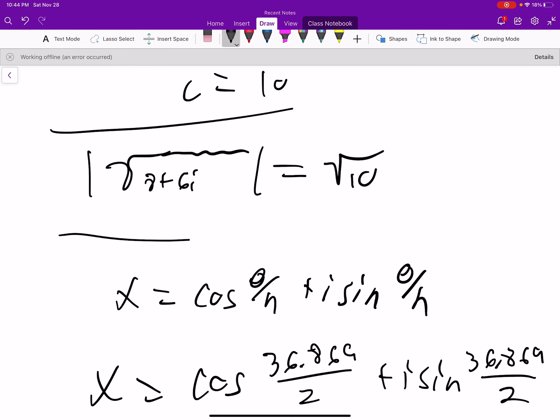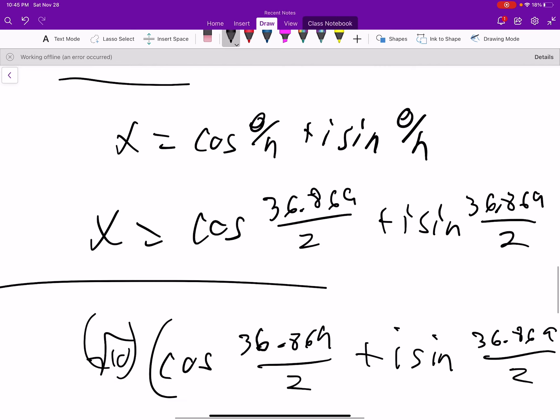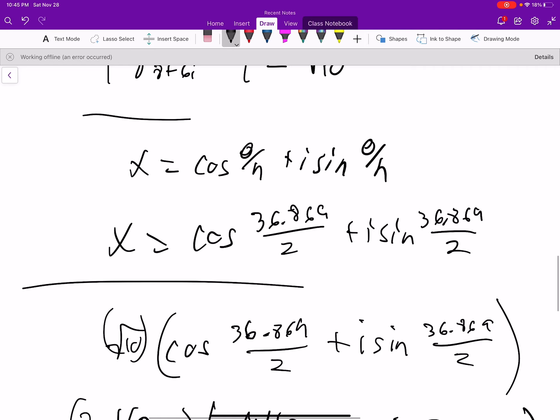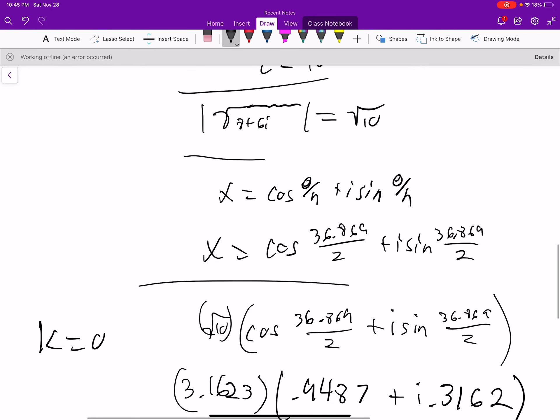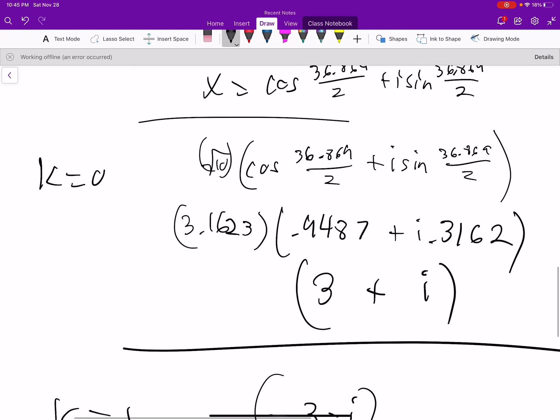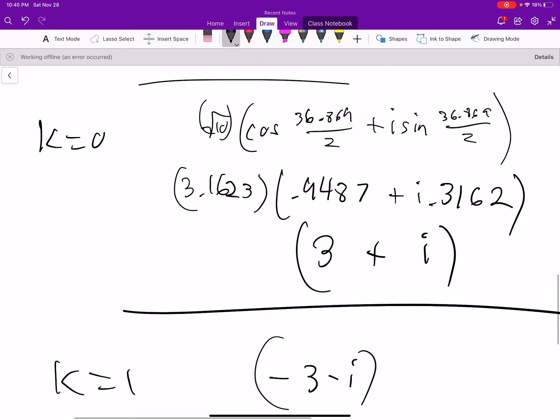We find the x value, which is going to be 36.869 over 2. And then to find the first value where k is 0, we just multiply the x value by the root 10 and simplify, and we get 3 plus i. But I know that the next value is just going to be negative 3 minus i because we are just going 180 degrees from that.